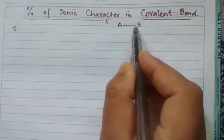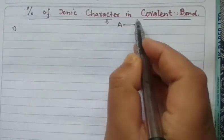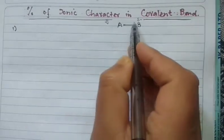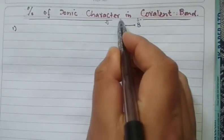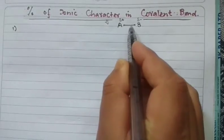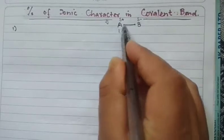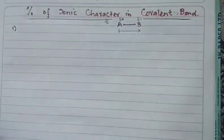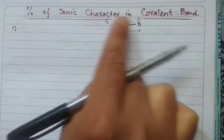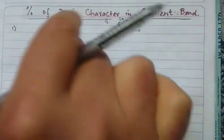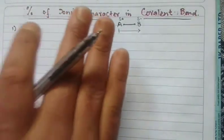The bonded pair shared between two atoms will be more towards the atom which is highly electronegative. For example, if B is highly electronegative, it gets a delta negative partial charge, and A gets a partial positive charge. This shift creates a dipole moment, and due to this electronegativity difference, ionic character is present. All covalent bonds have some ionic character, which can be calculated by various methods. Last class we discussed the dipole moment method.